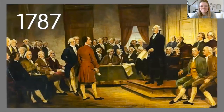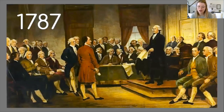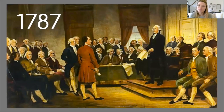In 1787, all of the founding fathers got together at something called the Constitutional Convention in Philadelphia. They all kind of agreed that the Articles of Confederation was not the best, but they ended up splitting into two different ways of thinking about how to move forward with running the United States of America.